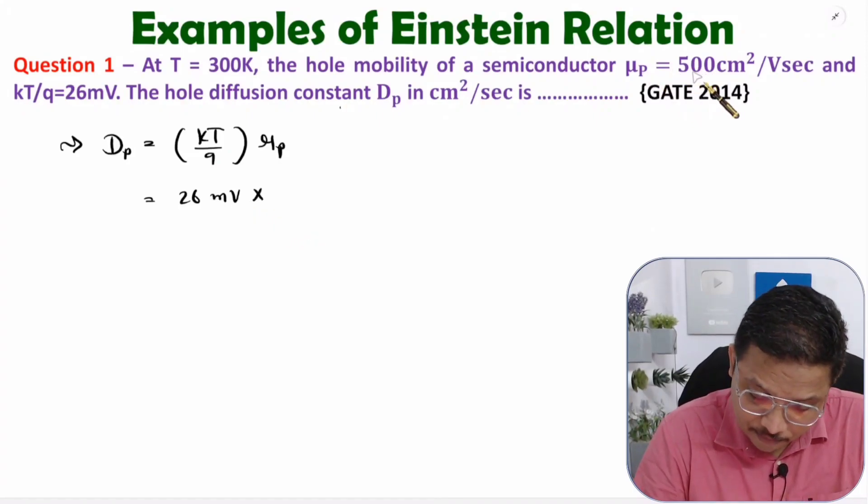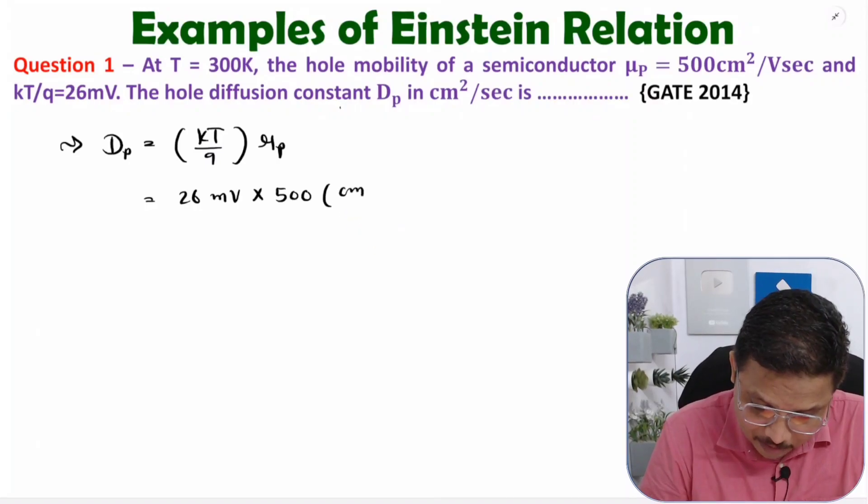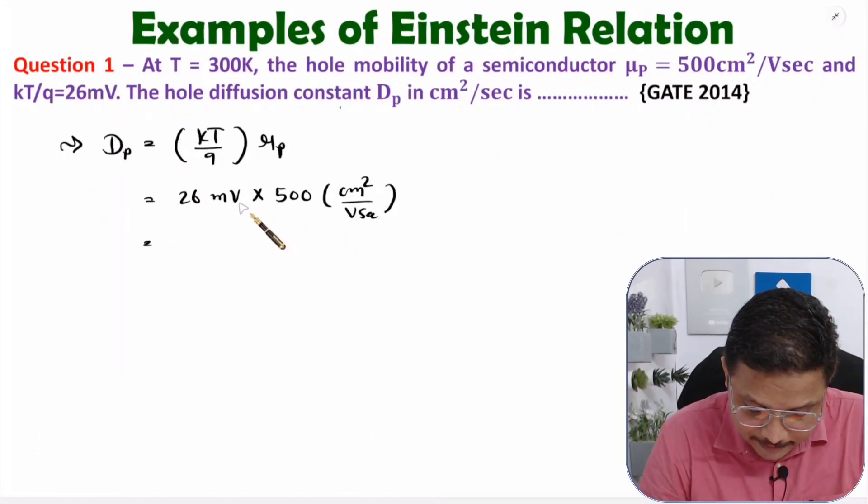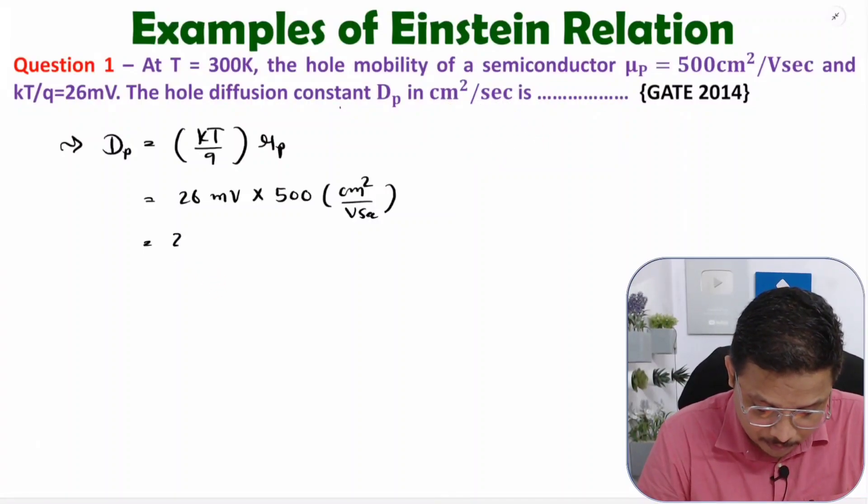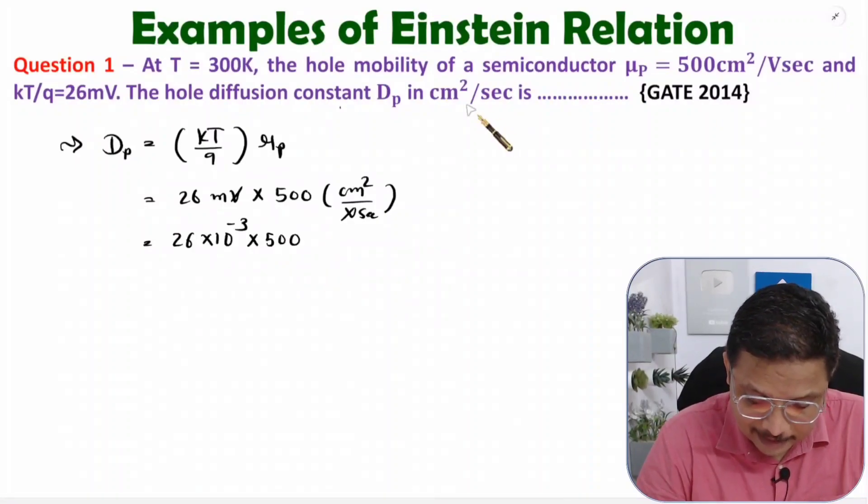500 cm²/V·s. Now if you observe, we have units in terms of cm², voltage, and seconds. Here it is in millivolts, and we want it in cm²/s. So 26 × 10⁻³ - that's what I need to do. Then the voltage will cancel, times 500. That gives you data in cm²/s.